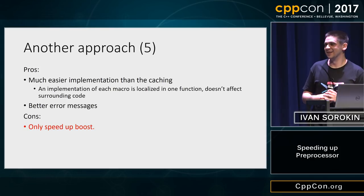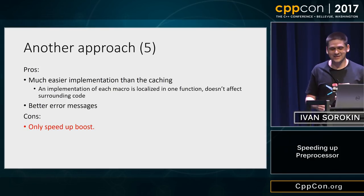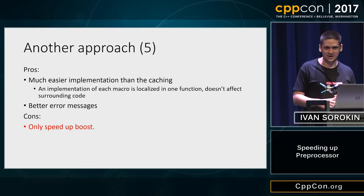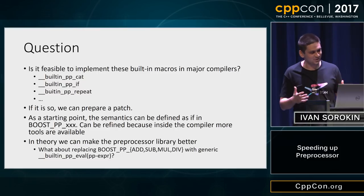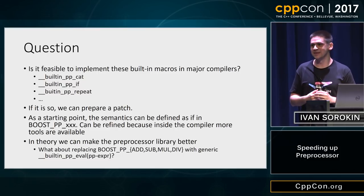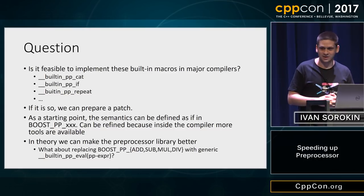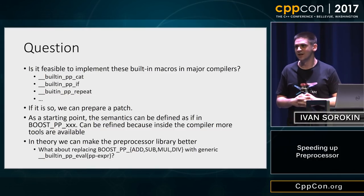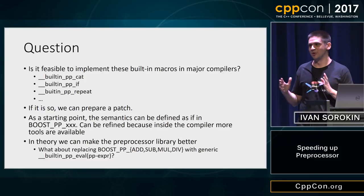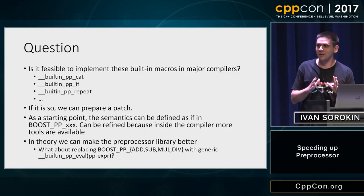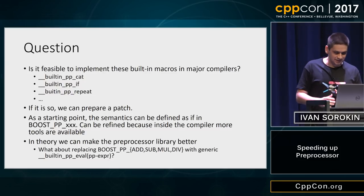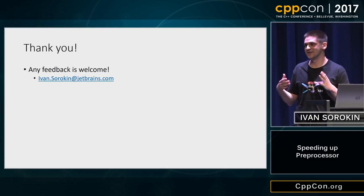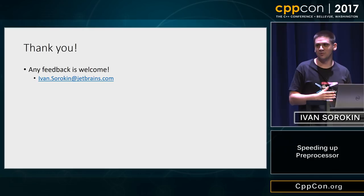The weakness of this approach is that it only speeds up Boost and programs that use it. How can we make this more widely applicable? My question is: what do you think? Is it feasible to implement these built-ins in major compilers? If so, we can contribute patches. It's an open question whether we should implement them 100% compatible with existing Boost macros, or can we improve them? If you have any ideas, suggestions, or comments, you can mail me or find me at JetBrains. Thank you.